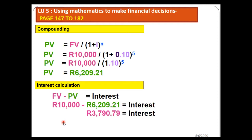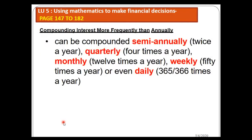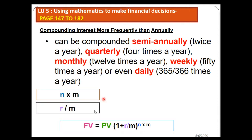Now there's something called frequency. So far we've been calculating interest compounded annually. But what about when interest is compounded semi-annually (twice a year), quarterly (four times a year), monthly (12 times a year), weekly (52 times a year), or even daily (365 times a year)? When you have a frequency other than annual, the formula changes — both n and r will change.